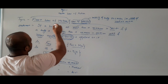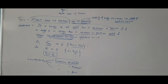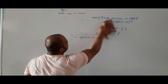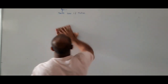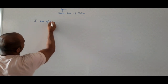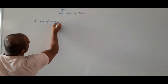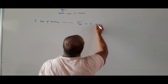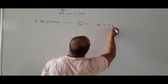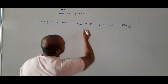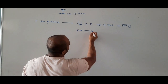Coming back to the first law of motion: the most important condition is that the external force is equal to zero. F external is equal to zero means the body is either at rest or remains in the same state of motion.